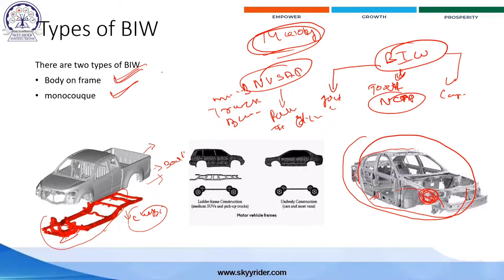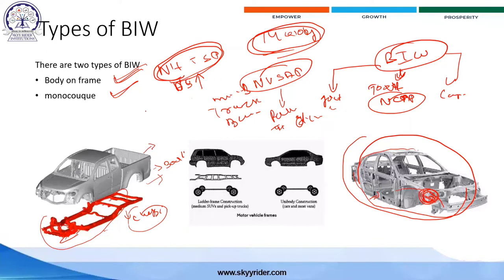In the US, there is the National Highway Traffic Safety program as the regulatory body. Different countries have their own regulations — Japan, Korea, Europe, UK — around 10 vehicle assessment program bodies exist where each country decides its own rules, regulations, and terms and conditions for manufacturing vehicles.